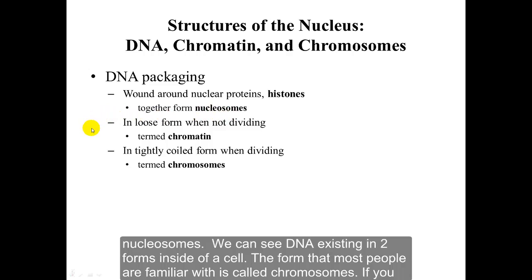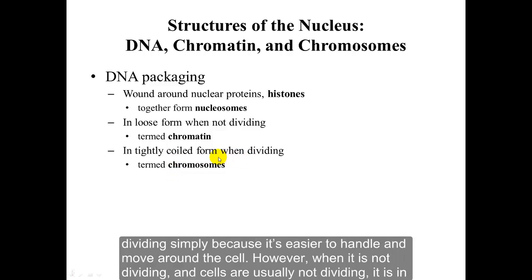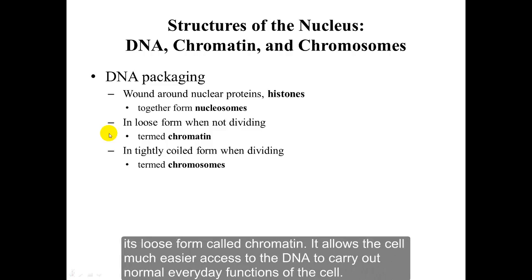We can see DNA existing in two forms inside a cell. The form most are familiar with is called chromosomes — this is the coiled form, and it is used when the DNA is dividing, simply because it is easier to handle and move around the cell. However, when the cell is not dividing, which is most of the time, DNA is in its loose form called chromatin, which allows much easier access to the DNA to carry out normal everyday functions of the cell.